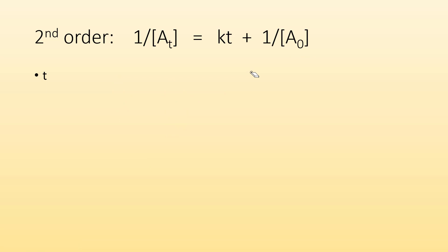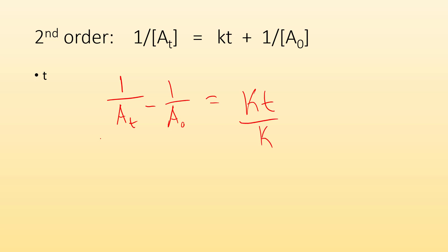For t, it's almost the same process. 1 over the amount at that time minus 1 over the amount that you started with equals kt, and this time I divide by k. So all that divided by k — k's cancel out and I'm left with t.